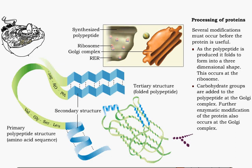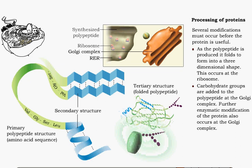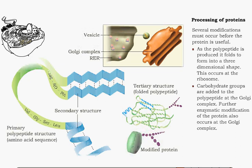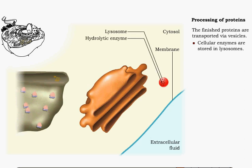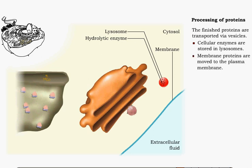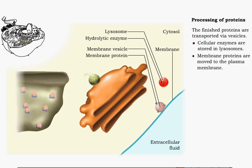Enzymes in the Golgi complex further modify the protein. The finished proteins are then distributed by vesicles. Membrane proteins are sent to the plasma membrane, and secreted proteins are transported through the plasma membrane.